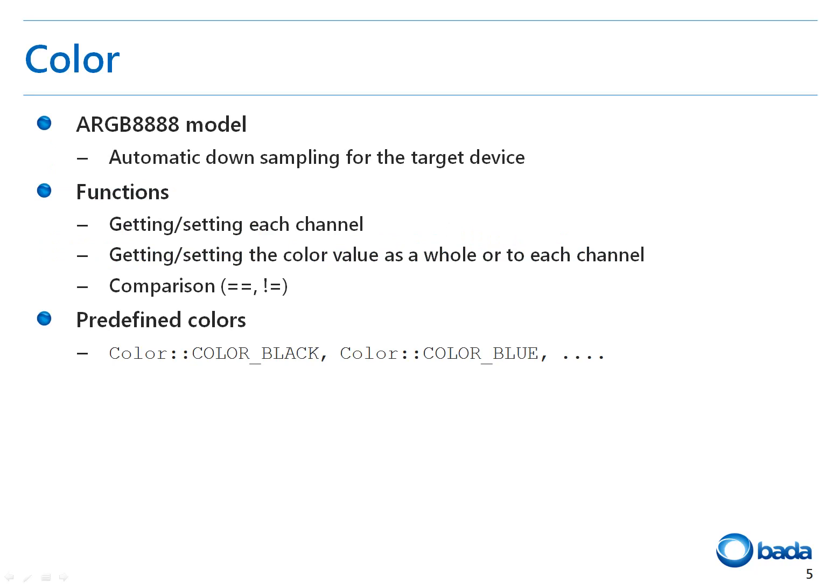Now let's look at Bada's color functions in more detail. The color class enables applications to define the color of the background and of its elements such as rectangles. The foreground color is used for drawing the elements. The class encapsulates a color represented by an ARGB — alpha, red, green, blue — color model. Bada uses the ARGB 8888 color model, meaning the alpha channel is supported and each RGB channel consists of 8 bytes. The color class supports functions to get or set each channel value or all ARGB 8888 colors, and also supports a function to compare colors. In addition, the color class pre-defines frequently used colors for convenience.